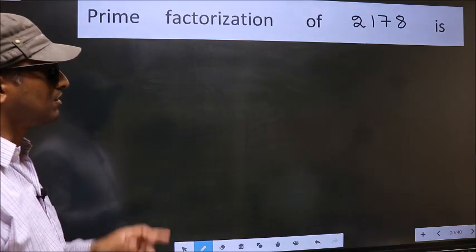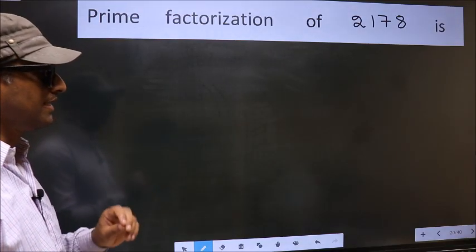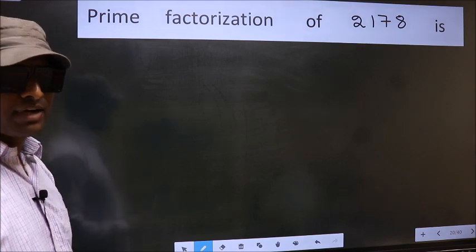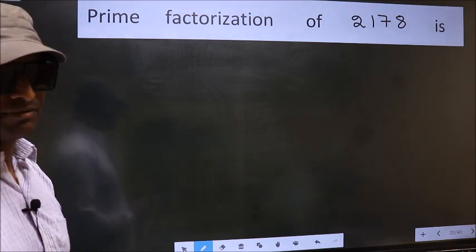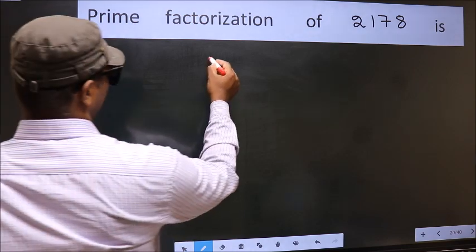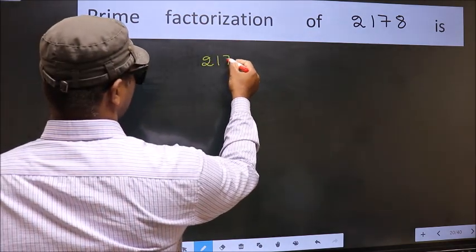Prime factorization of 2178 is. To do prime factorization, first we should frame it in this way. 2178.